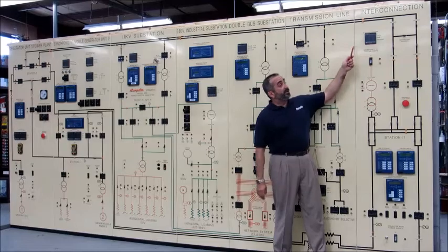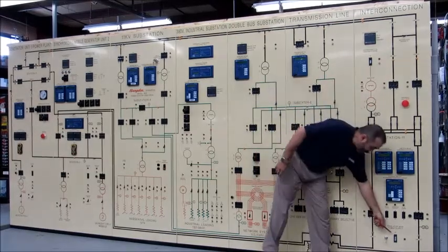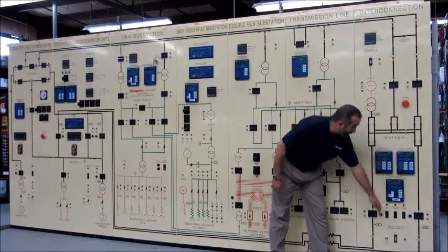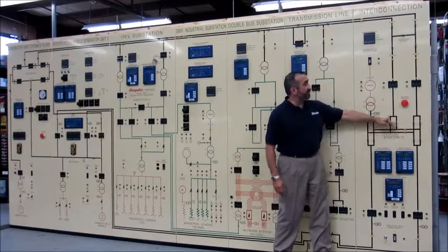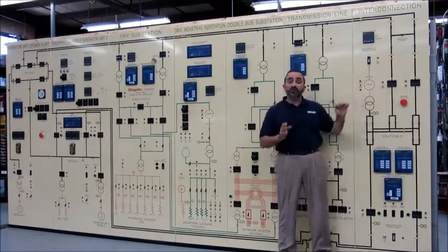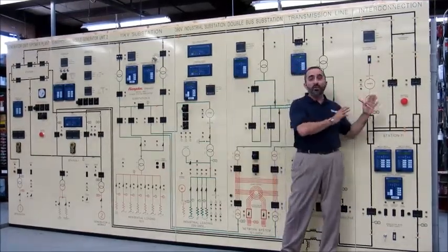This is panel number seven, consisting of main circuit breaker and control circuit breakers, a double-bust station, and an interconnection point, which allows you to connect to an adjoining power system.